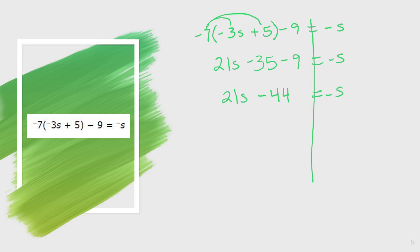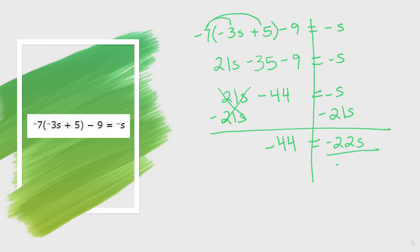Now I need to get my variables together. Since this negative s is by itself, I'm going to move the 21s — I subtract 21s on both sides. I subtract because it's positive. So I'm left with negative 44 equals negative s minus 21s, which is negative 22s. I then divide both sides by negative 22. Negative 44 divided by negative 22 is positive 2. So I get that s equals 2.